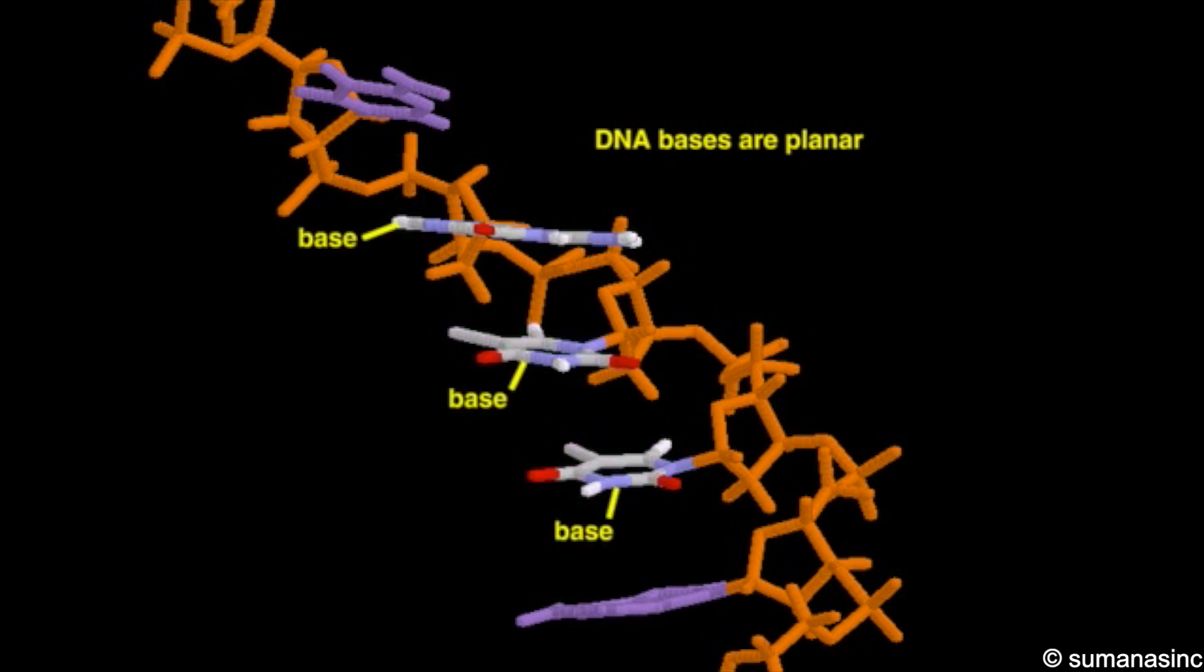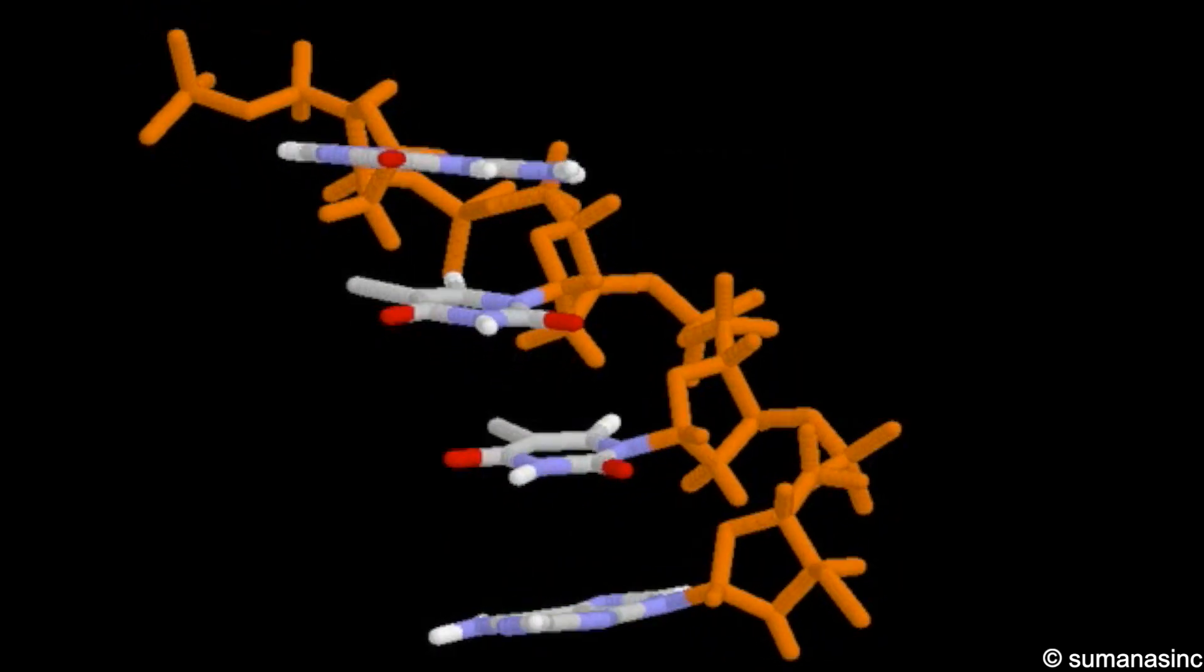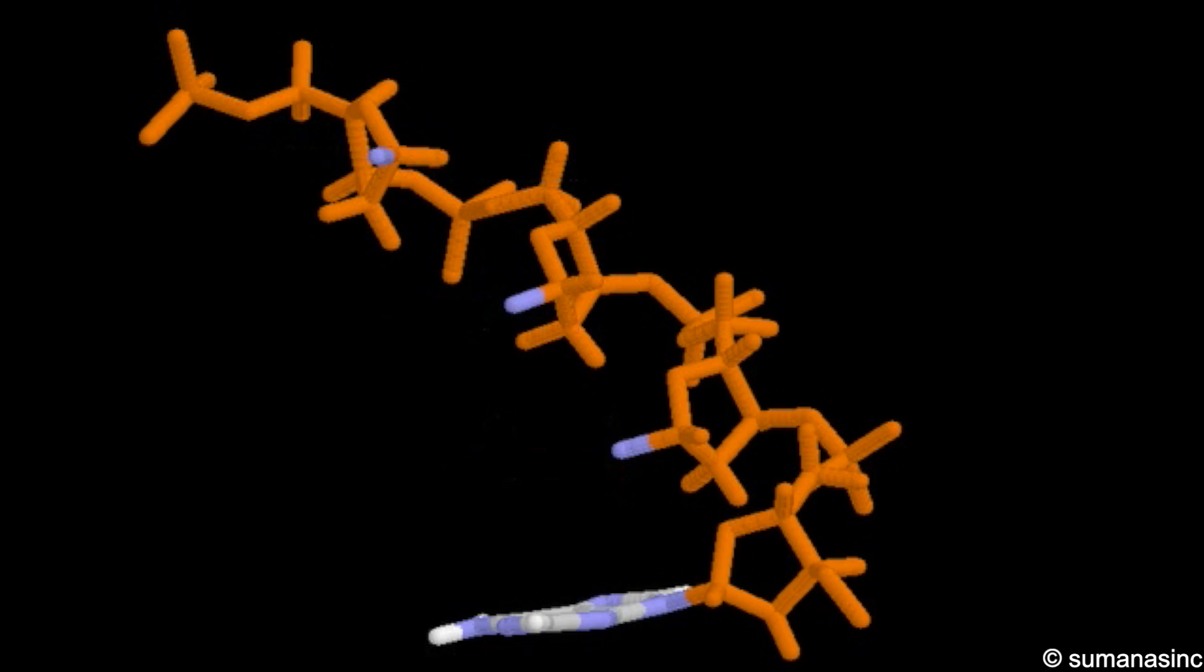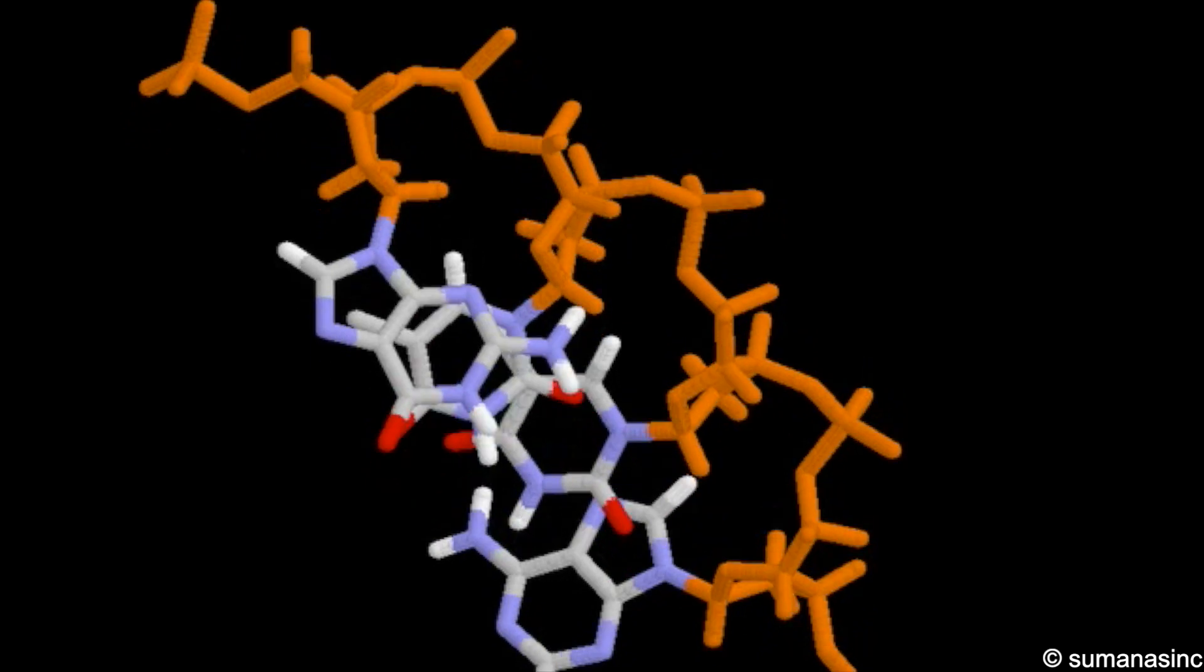Pyrimidine bases are composed of one ring, and purine bases of two rings. Adjacent bases are aligned so that their planar rings stack on top of one another. Base stacking contributes significantly to the stability of the double helix.